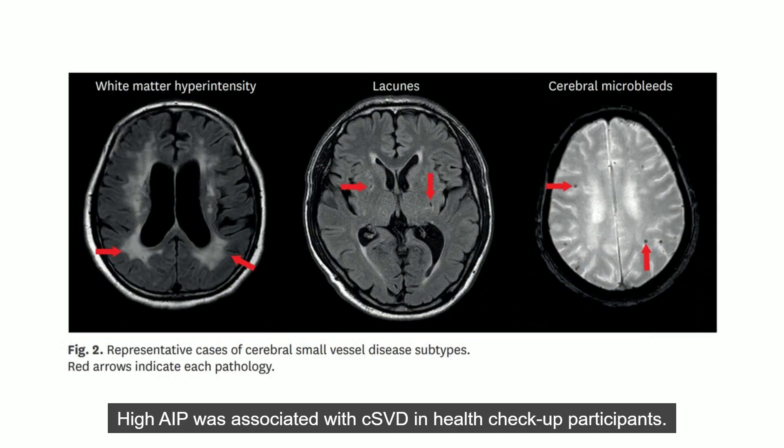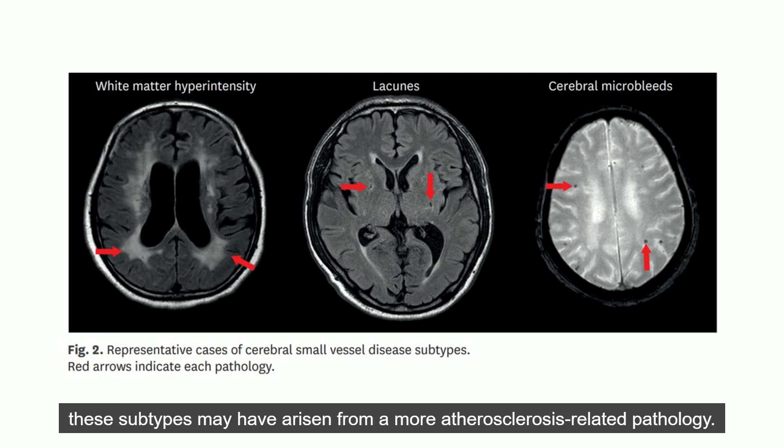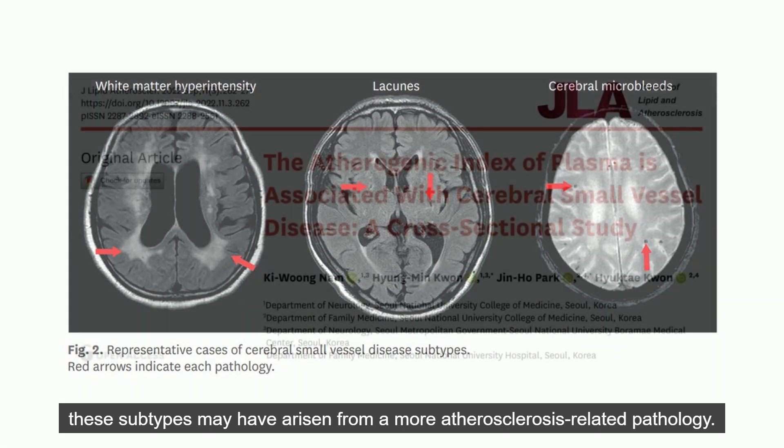High AIP was associated with cerebral small vessel disease in health checkup participants. Since this close relationship was only seen in white matter hyperintensity and lacunes, these subtypes may have arisen from a more atherosclerosis-related pathology.